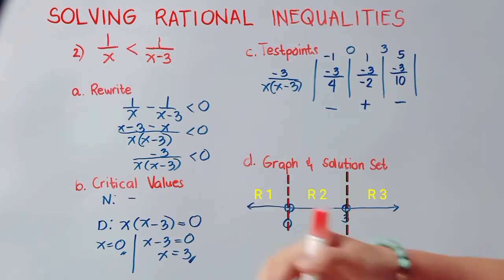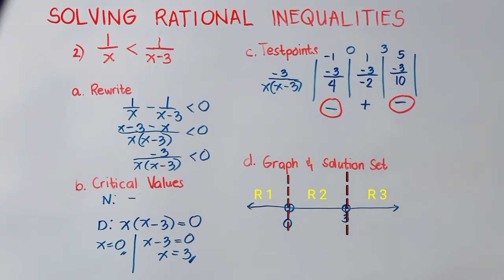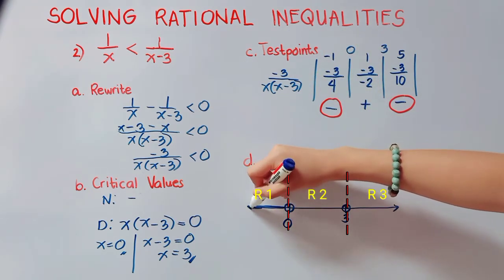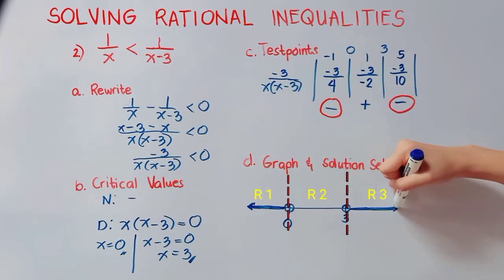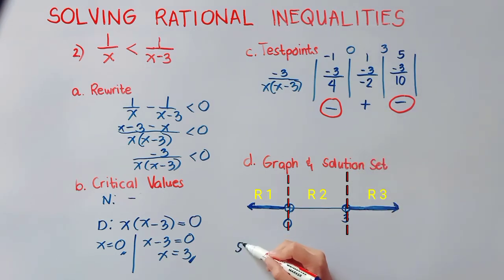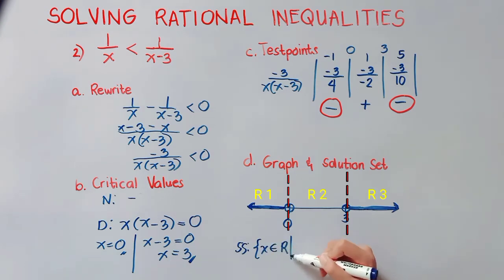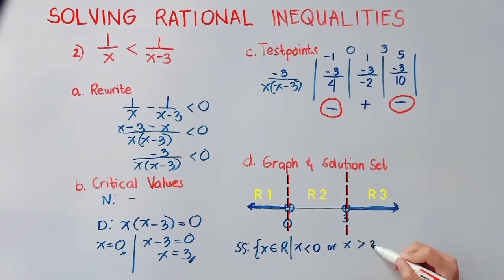Looking at our given, we need values less than 0, so we are looking for negative values. Therefore, our solution is region 1 and region 3. We shade those regions on the line graph. Our solution set is x is an element of real numbers where x is less than 0, or x is greater than 3.